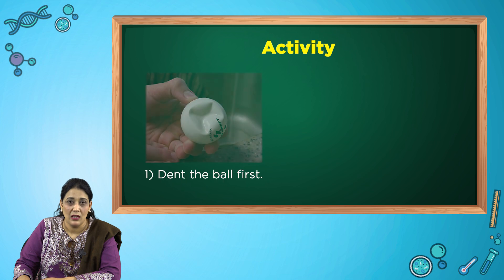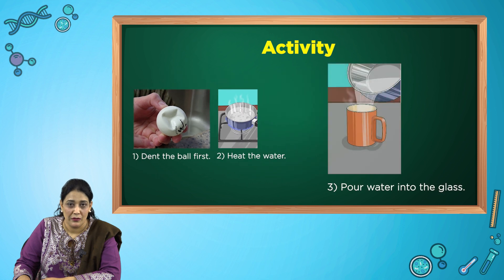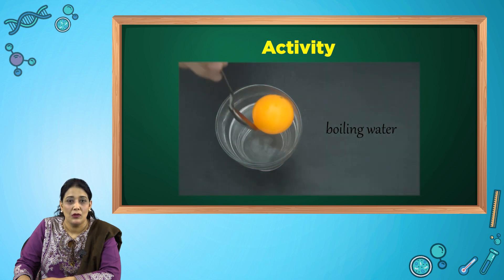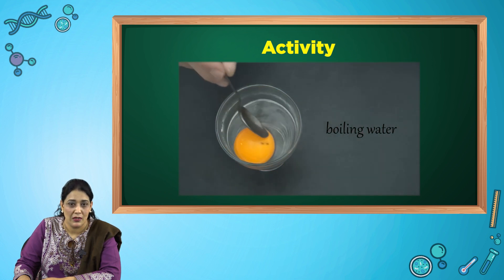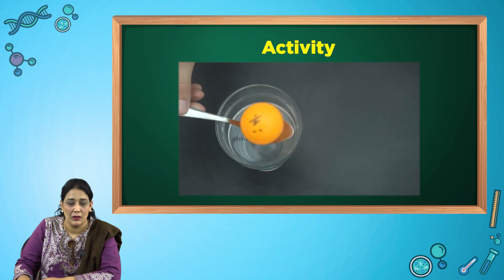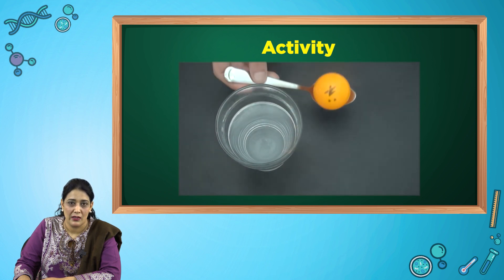Firstly, we dent the ball, then we heat the water. We pour the water into the glass, and finally we put the ping pong ball on the water and move it with the spoon so the entire ball heats up. Now the ball is not dented.